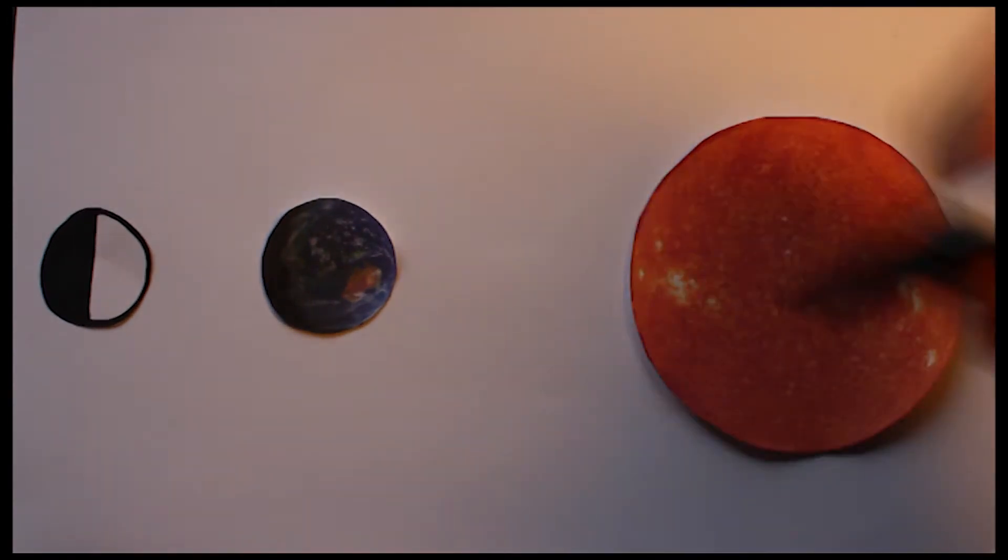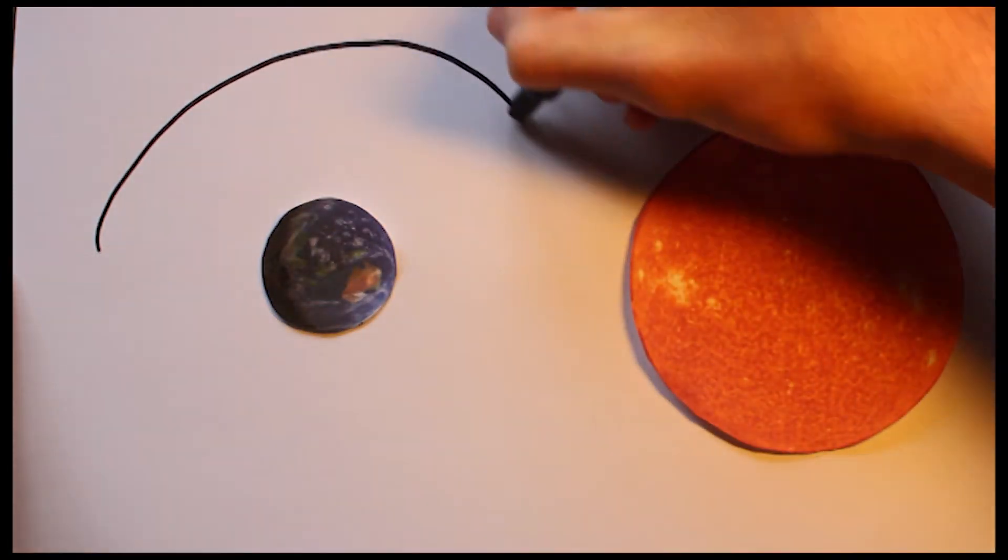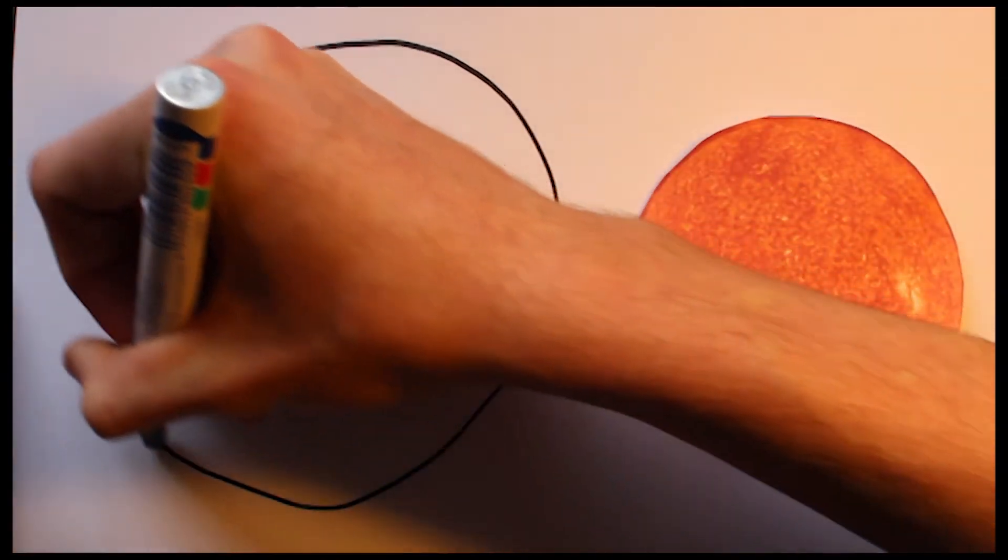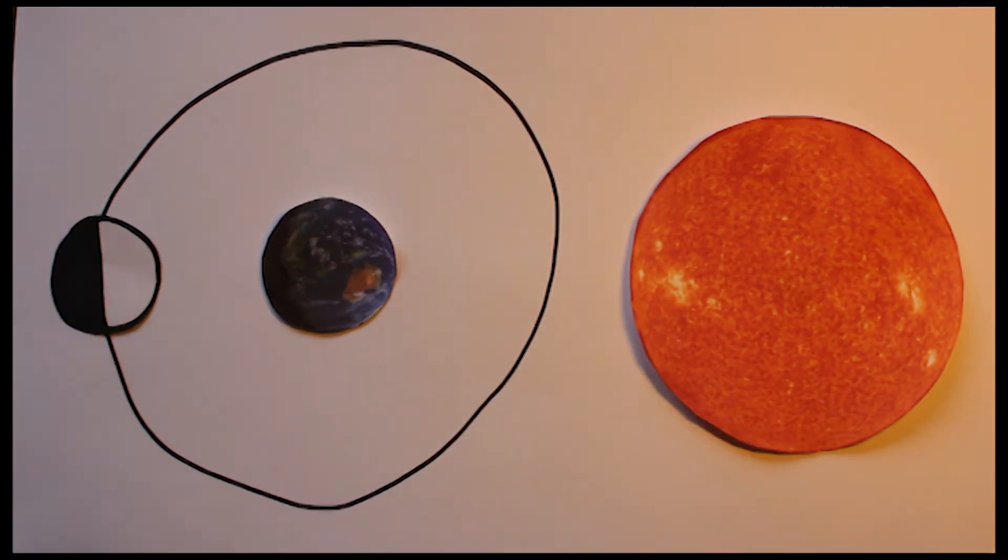So as you can see here, we've got the Sun, the Earth, and the Moon. The Moon has an elliptical orbit around the Earth, but for ease of explanation we'll use a circle. Or, my best attempt at a circle.